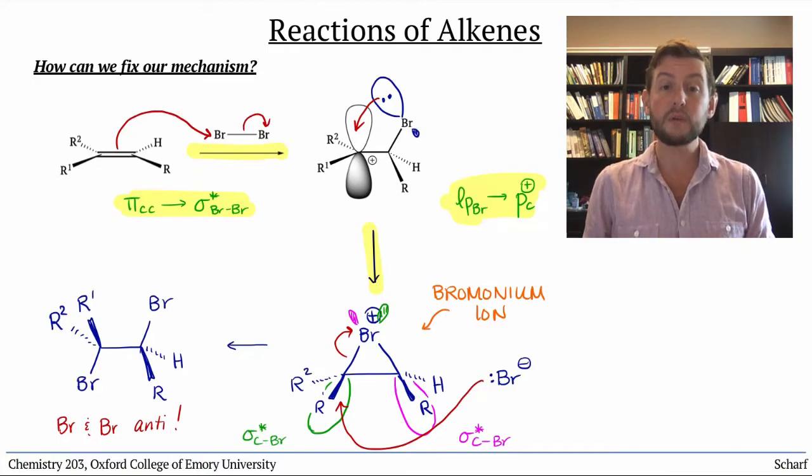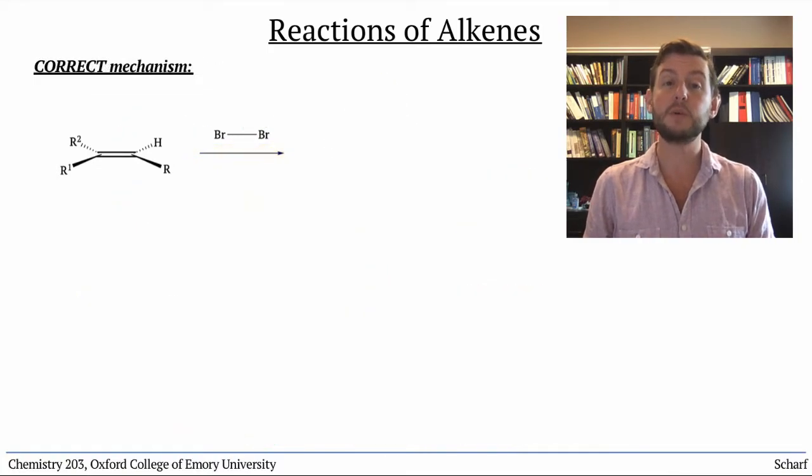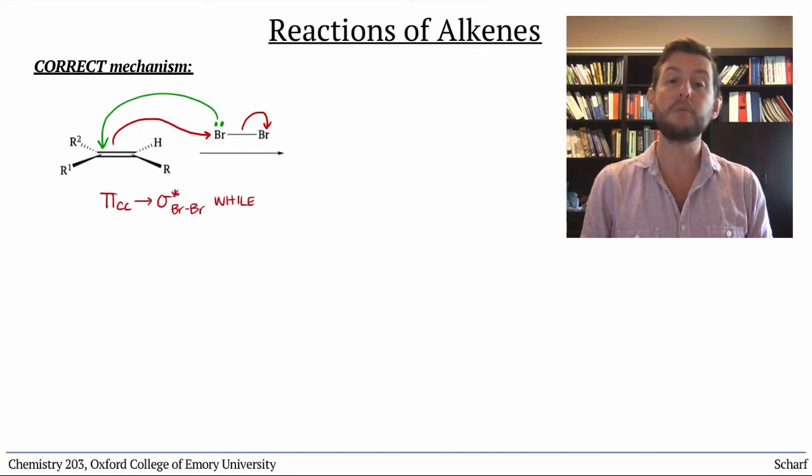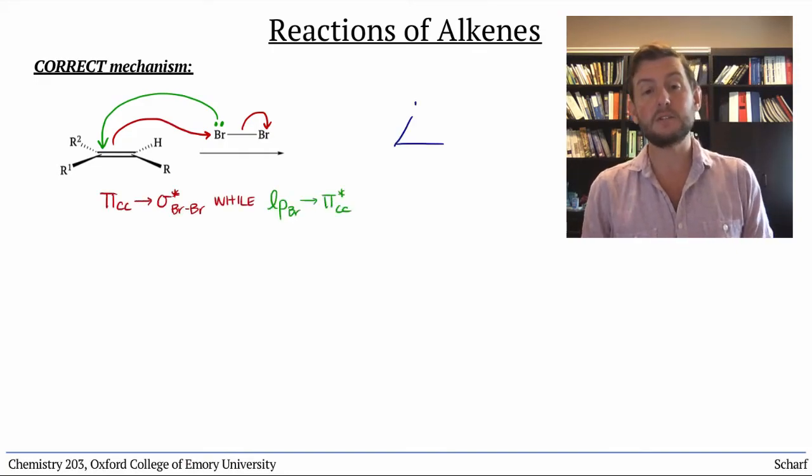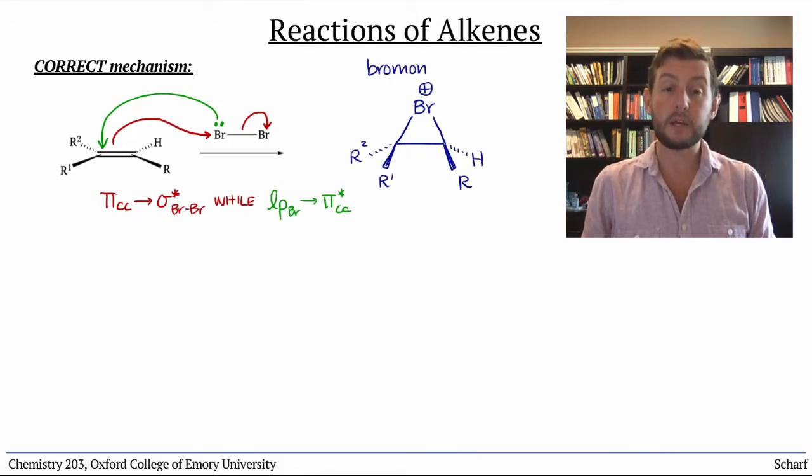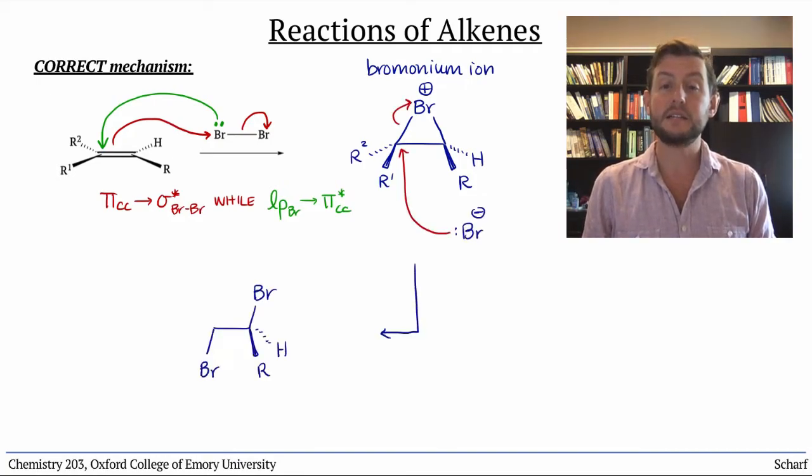So, the correct mechanism of the reaction between an alkene and Br2 shows two sets of arrows. π CC donating into σ* BrBr and breaking the BrBr bond, while simultaneously a lone pair on bromine donates back into π* CC. This forms the bromonium ion, which is attacked by Br- from the backside to give the anti-dibromide.